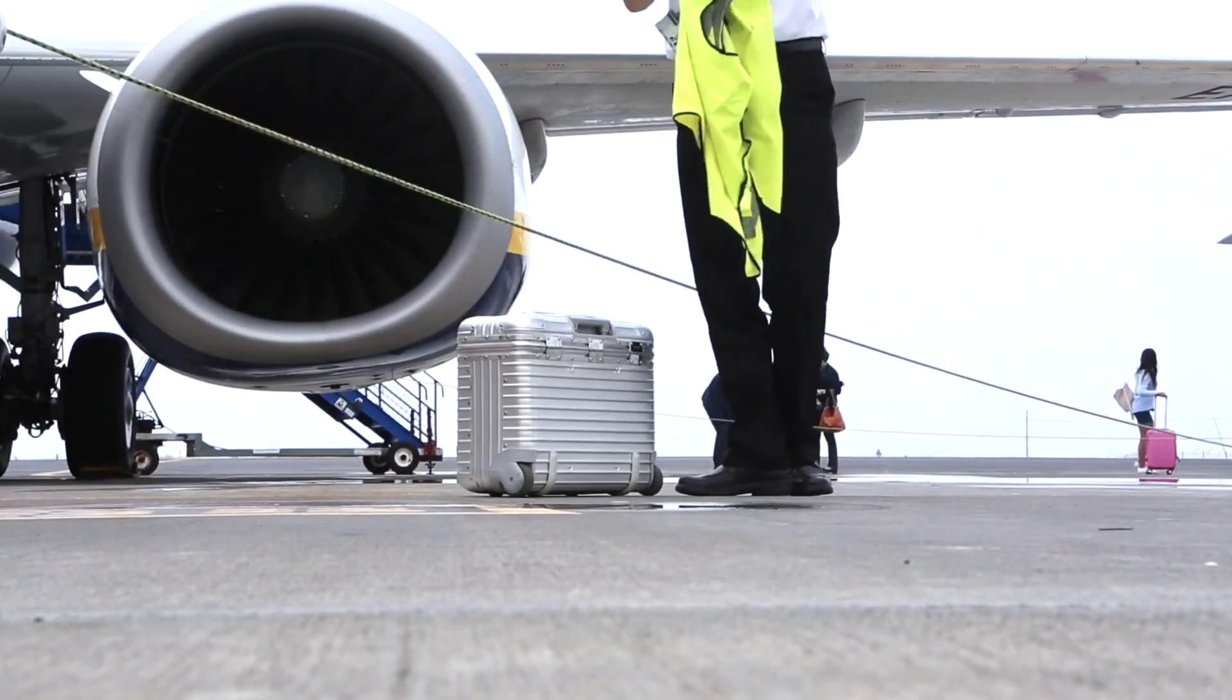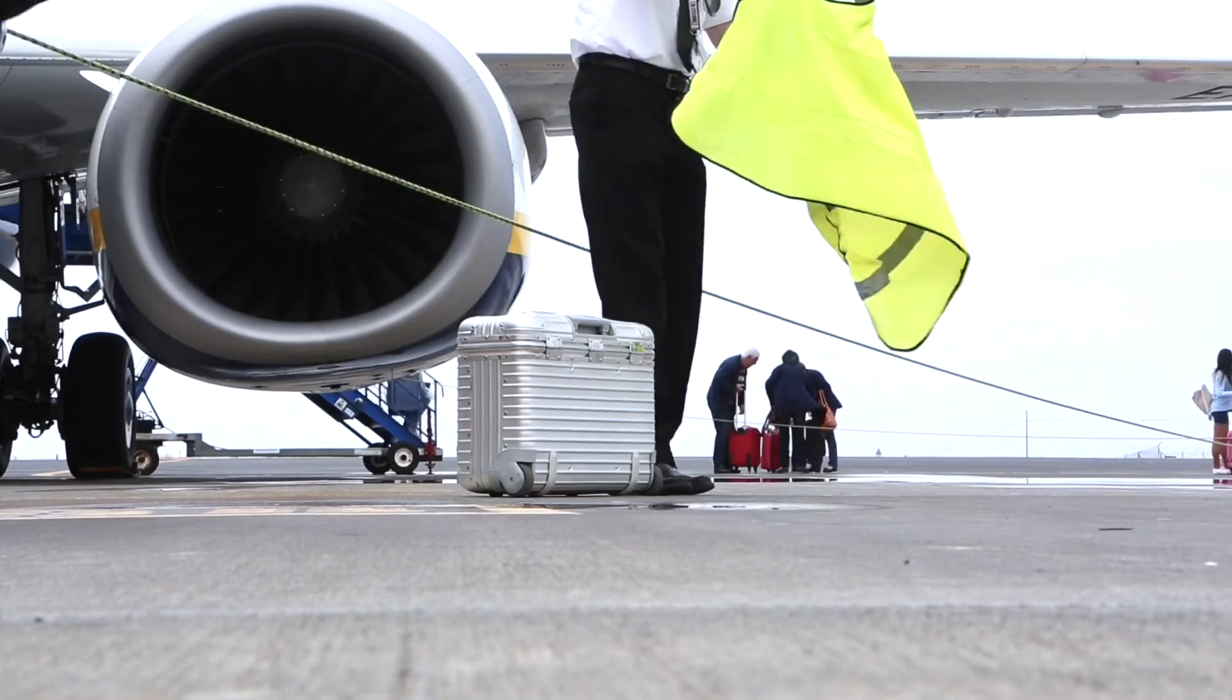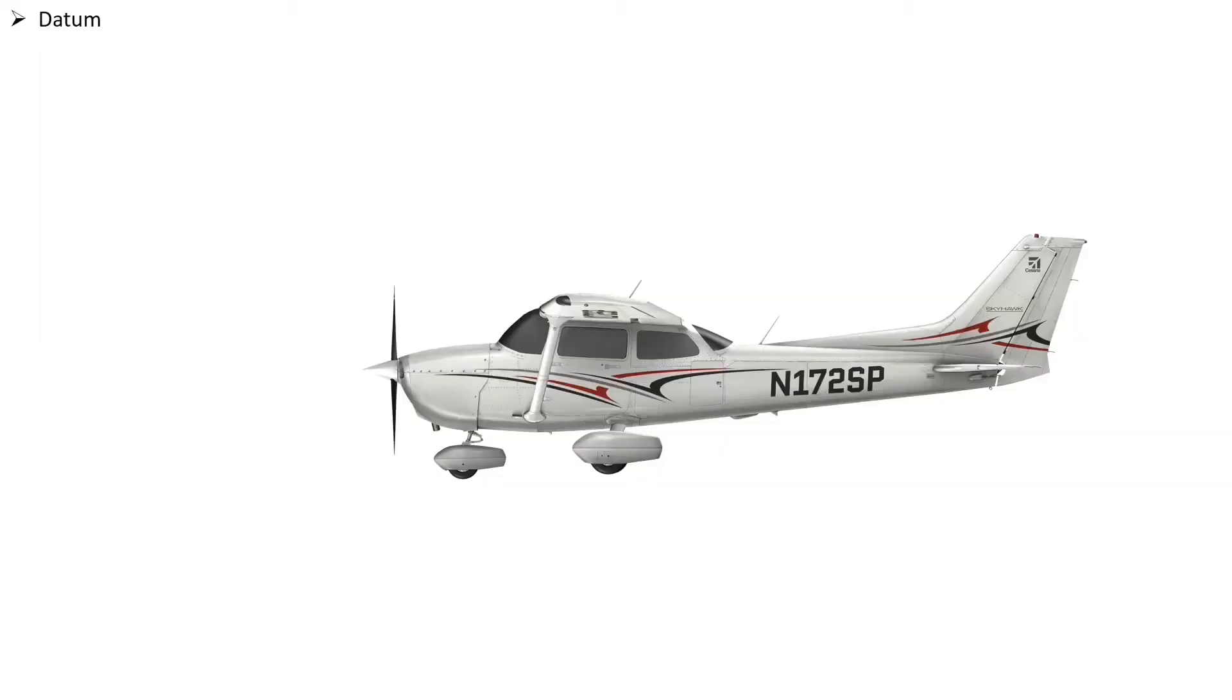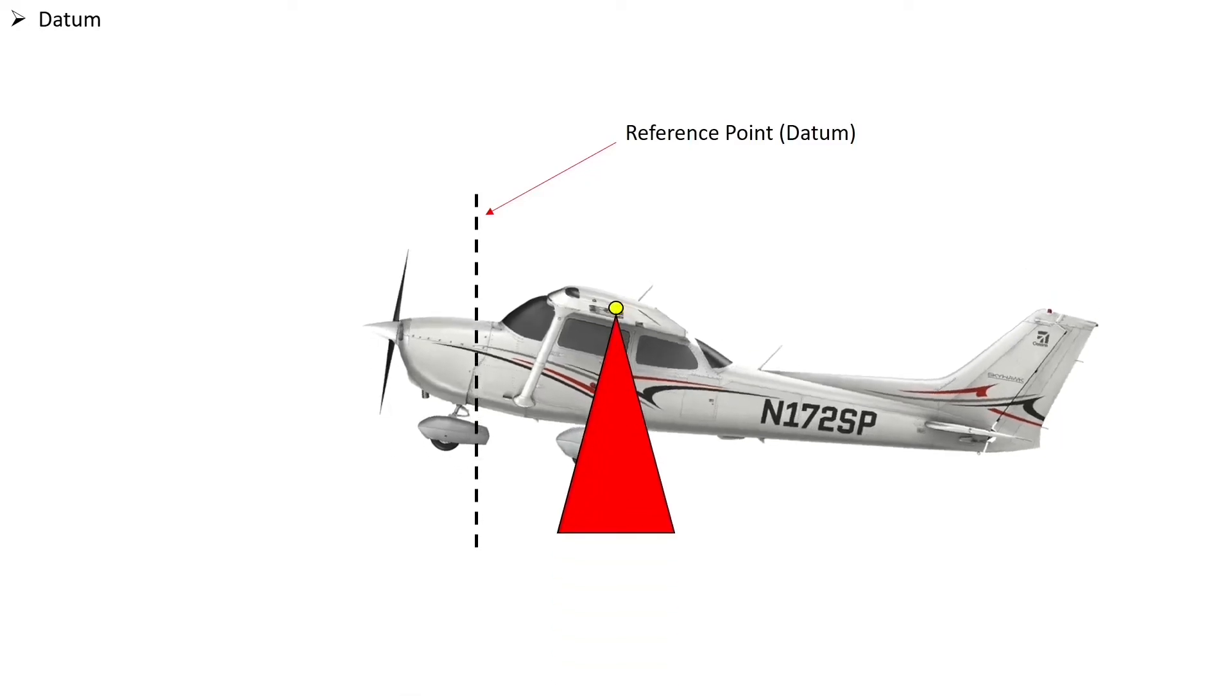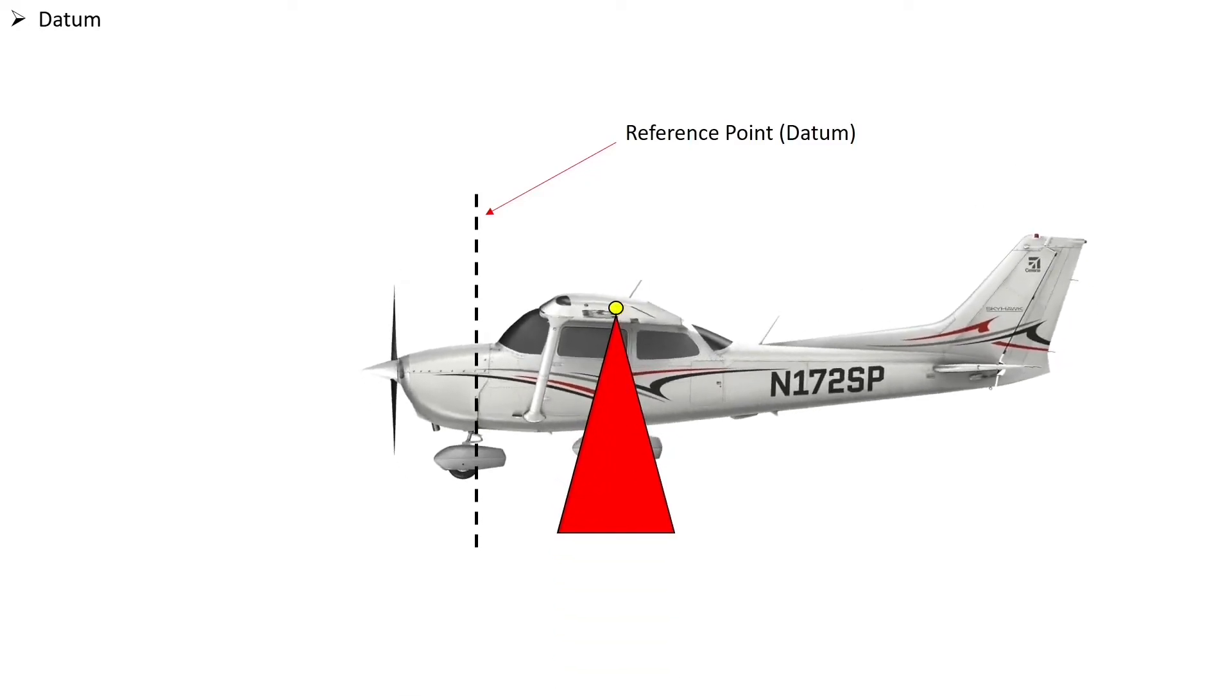There are a few terms we need to understand before progressing. The datum is an imaginary vertical plane established by the manufacturer, from which all measurements of arm are taken from. On the Cessna its located at the firewall. It is not the fulcrum however, the aerodynamic fulcrum is the centre of pressure.